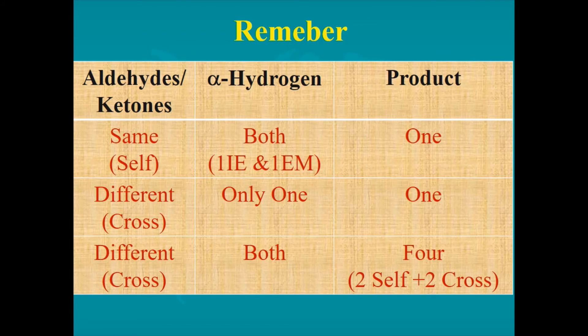In short, just remember: in self aldol, both aldehydes or ketones have alpha hydrogens — one undergoes inductive effect and one undergoes electromeric effect, so we get only one product. In cross aldol, there are two options: if only one of the two different aldehydes or ketones has alpha hydrogen, its inductive effect occurs and the other undergoes electromeric effect — giving one product. But if both different aldehydes or ketones have alpha hydrogen, we get four products: two from self aldol and two from cross aldol, because each can perform inductive effect once and electromeric effect once.